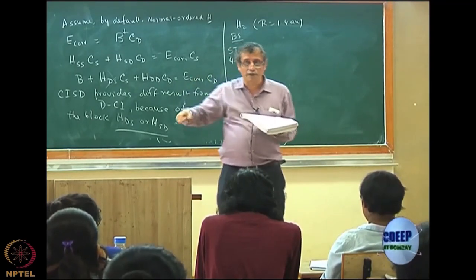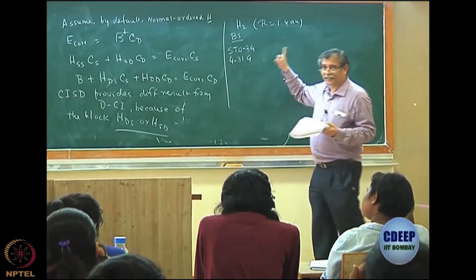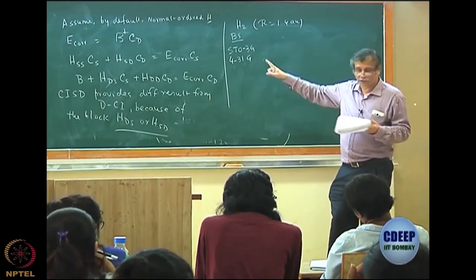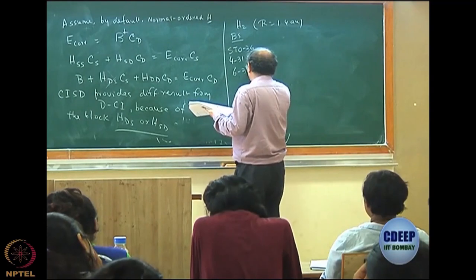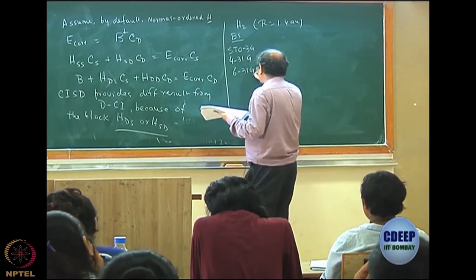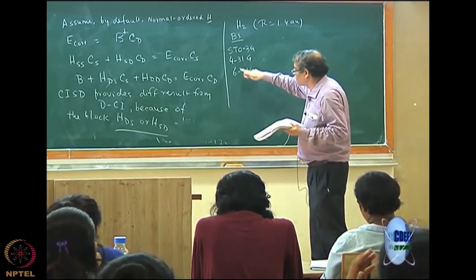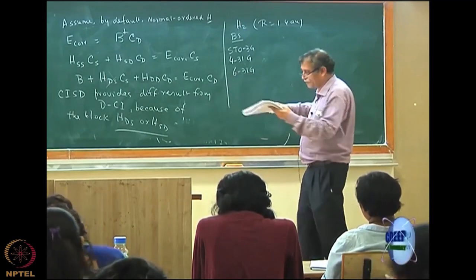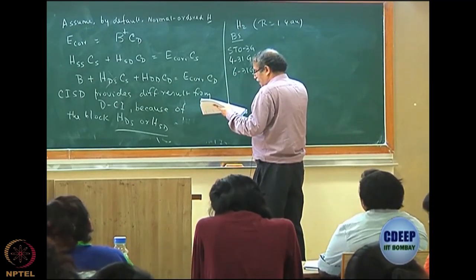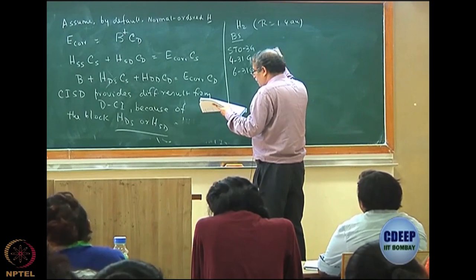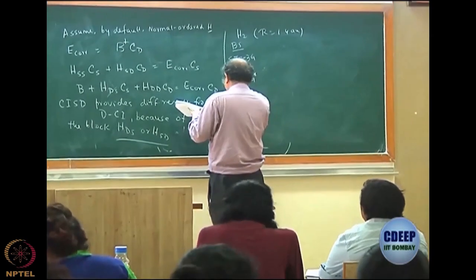The number of contracted Gaussians depends on how many entries there are. 4-31G and 6-31G give the same number of contracted bases, except the core is better described in 6-31G. I am also going to give you 6-31G*, and then a very large basis — the star-star is not important for hydrogen.